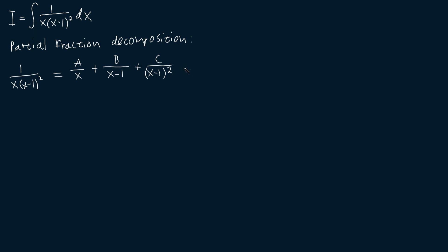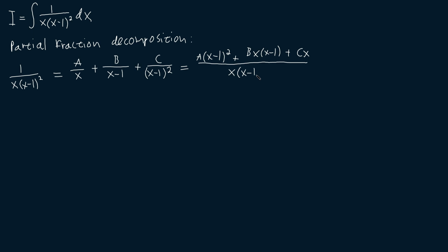Then, to get the common denominator, we must multiply A by x-1 squared, so we're going to get A times x-1 squared. Then we must multiply B by x times x-1, so we're going to get Bx times x-1. Then we have to multiply C by x, so we're going to get Cx. And everything divided by our common denominator, x times x-1 squared.